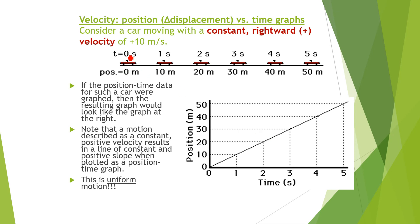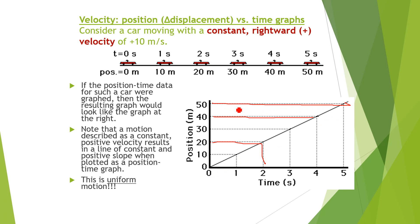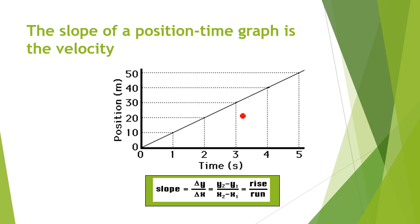Let's discuss in more detail using data representing the time and position of an object. When time is 0, position is 0. When time is 2 seconds, position is 20 meters. When time is 4 seconds, position is 40 meters. After 5 seconds the position is 50 meters from the initial position. This is a straight line, meaning the car is moving with uniform velocity. The slope equals rise divided by run: Δy divided by Δx, where Δy is change in y and Δx is change in x.